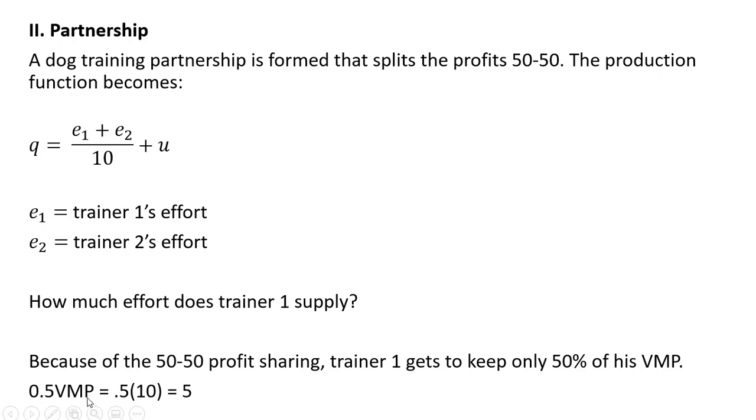So 0.5 times the value of the marginal product. With self-employment, the value of the marginal product was 10, so half of that is now only 5. So setting the new value of the marginal product equal to the marginal cost and solving, trainer 1 will provide only 30 units of effort. And for trainer 2, it's going to be exactly the same.